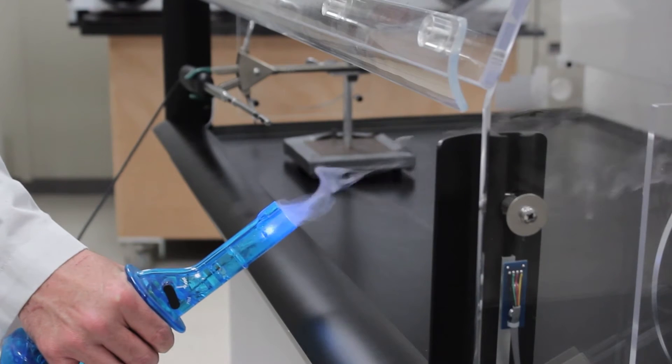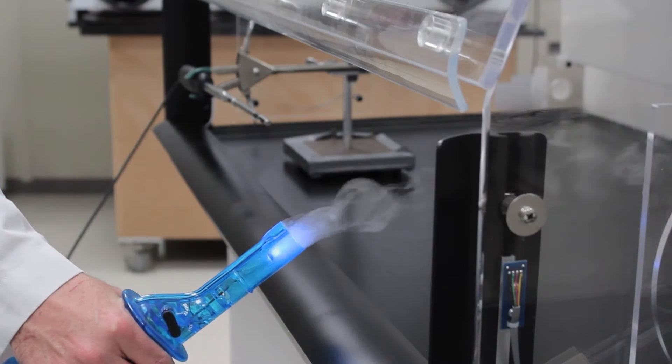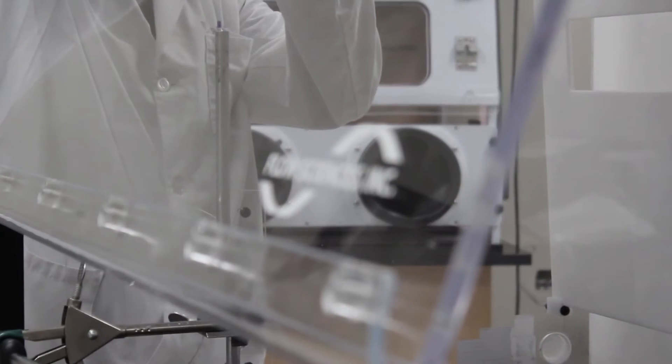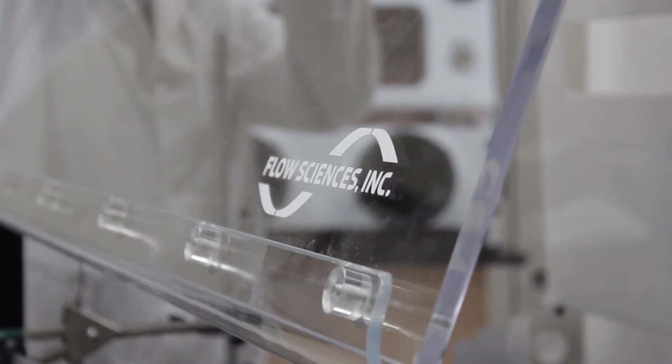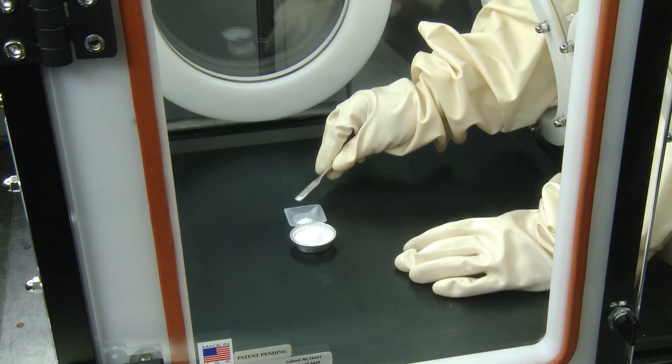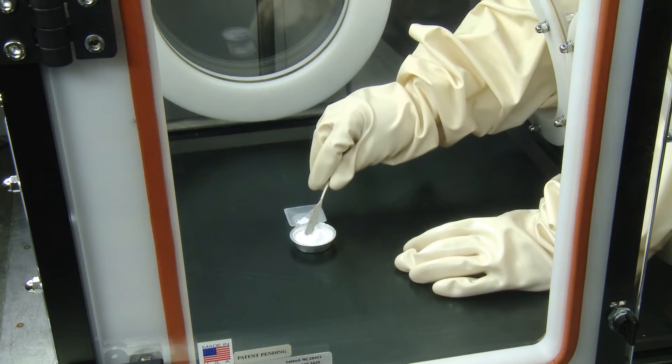Take the controlled atmosphere contained environment glove box. Many of the components used in this unit are common across the line. The transparent acrylic construction, here used for most of the box but used only on the face of others, provides operators with a clear view of the interior.